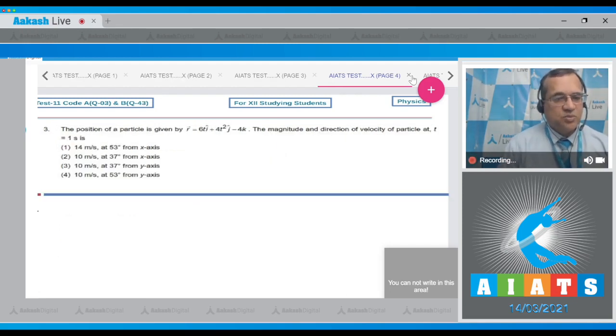Question number three says that the position of a particle is given by the relation: position vector r equals 6t*i_cap plus 4t^2*j_cap minus 4*k_cap. Find the magnitude and direction of velocity of the particle at t equals one second.